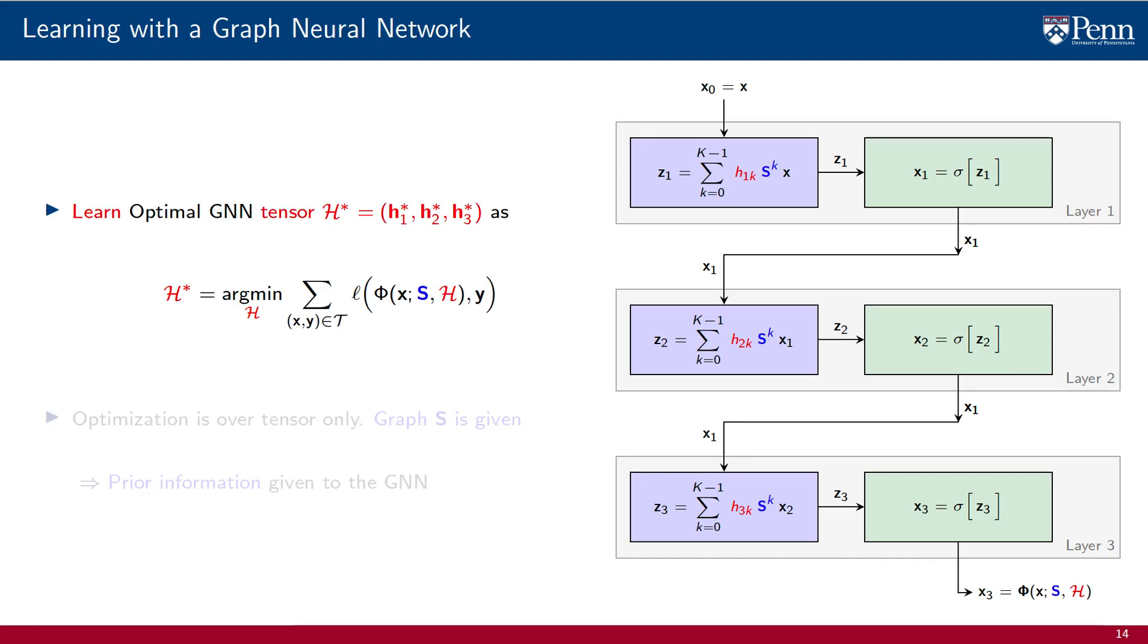The problem of learning with a GNN reduces to the problem of finding the tensor H star that minimizes the average loss over the training set. This is analogous to the problem of learning with a perceptron or learning with a graph filter, except that the tensor H contains coefficients for a group of filters, instead of containing coefficients for a single filter only.